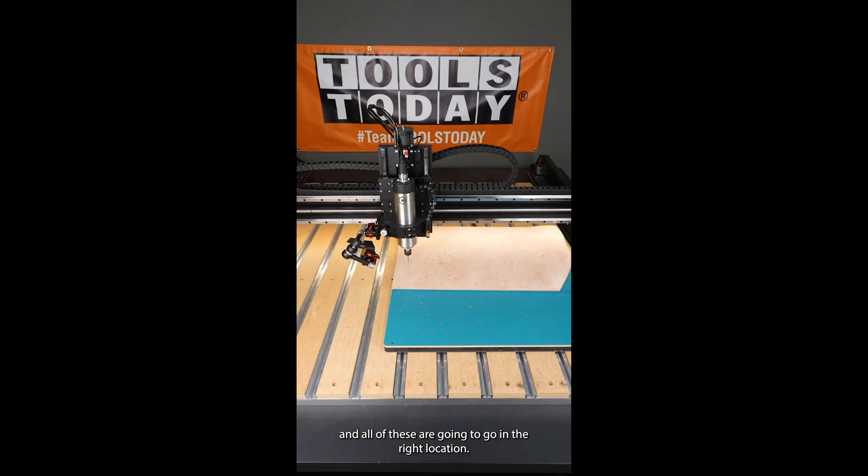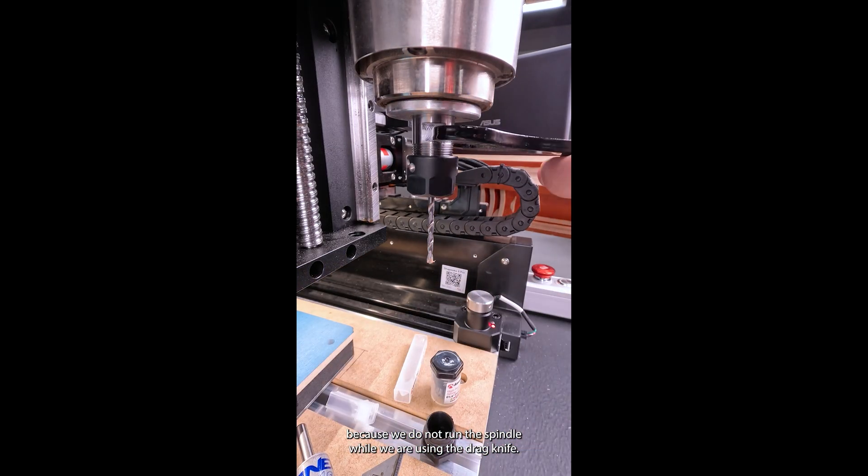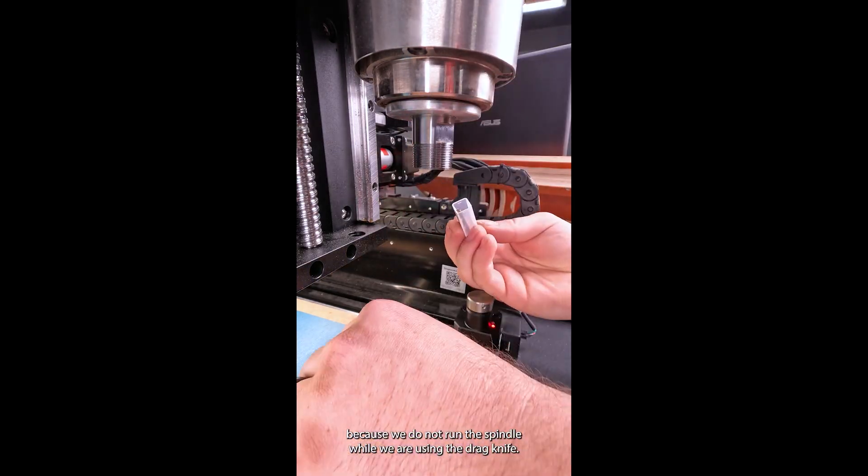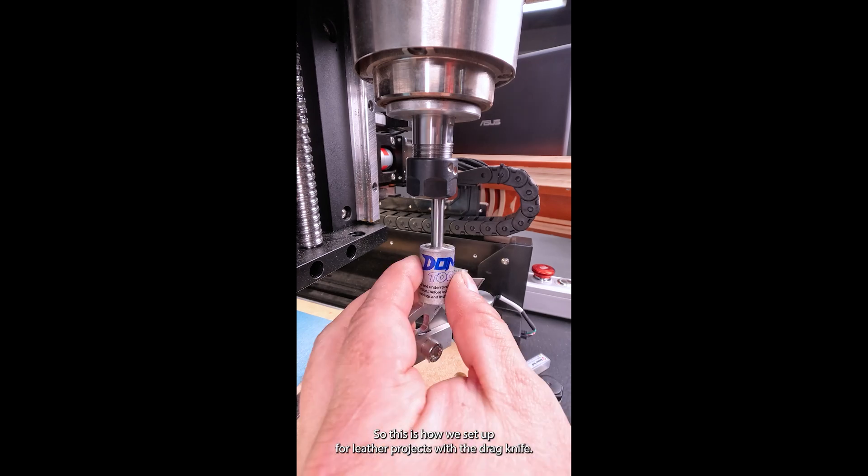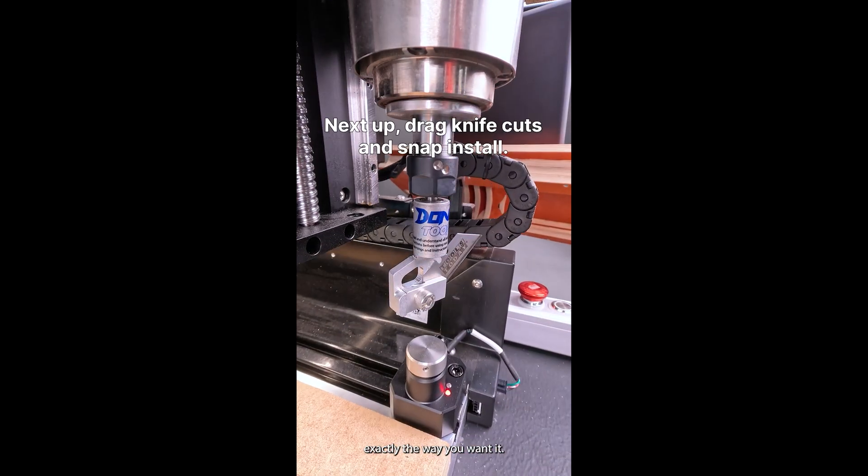Now we can switch out for the drag knife after we turn off the spindle, because we do not run the spindle while using the drag knife. This is how we set up for leather projects with the drag knife. The setup is crucial to get right so that your project turns out exactly the way you want it.